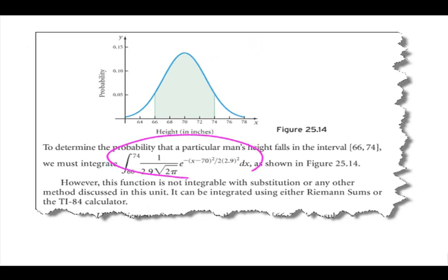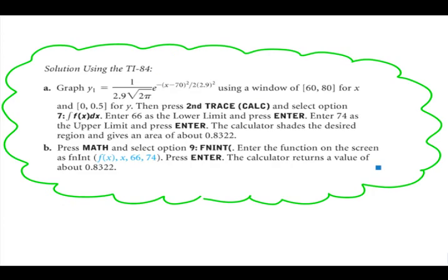Now, this particular function here is an example of one that cannot be found by hand. So we must use technology. It's pretty complicated, but let's give it a try. This is about as complicated a function as you can enter into the graphing calculator. Here's the instructions from our textbook. It shows two different ways to get the answer, A and B. We'll do them both.